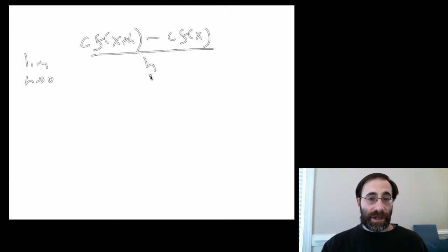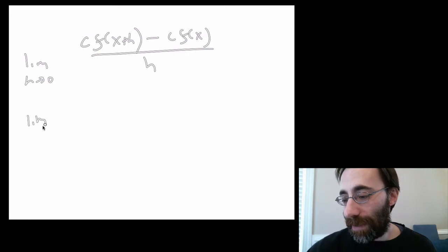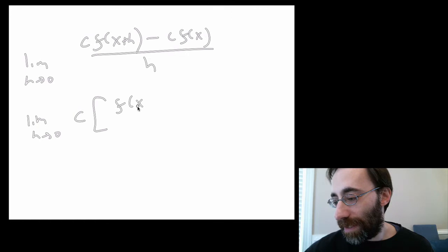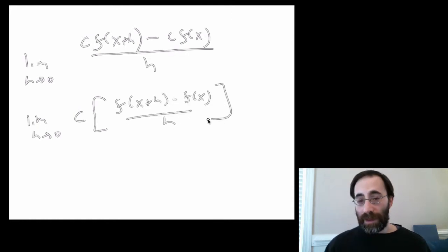Well, if c is a constant, it occurs on both terms in the numerator. We can pull it out and we get the limit of h goes to zero, c times this. That thing in the brackets is the derivative. Recalling that the limit of a constant is just the constant itself, and recalling that the limit of a times b is the limit of a times the limit of b. We talked about that back in lecture two.